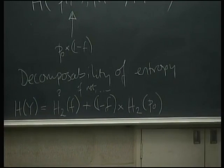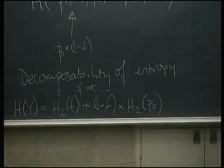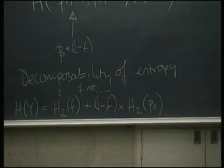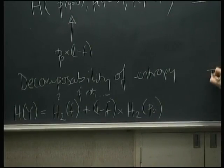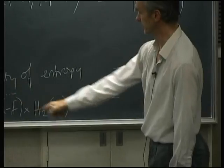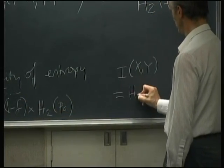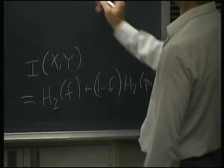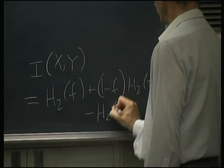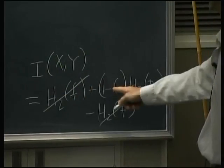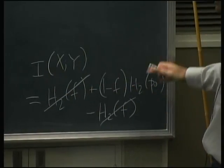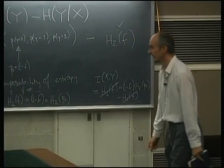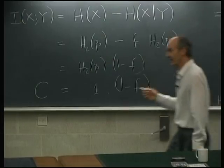This approach is in the textbook. You can make life easy by being smart about how you compute entropy. The mutual information works out to H2(f) + (1 minus f)·H2(p0) minus H2(f), giving a grand cancellation and leaving us with (1 minus f)·H2(p0), as before. Maximizing that, the capacity is 1 minus f.